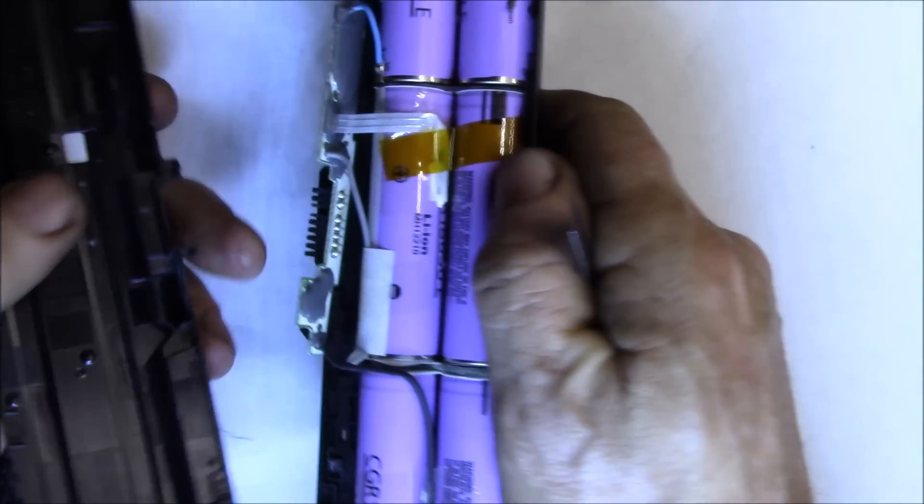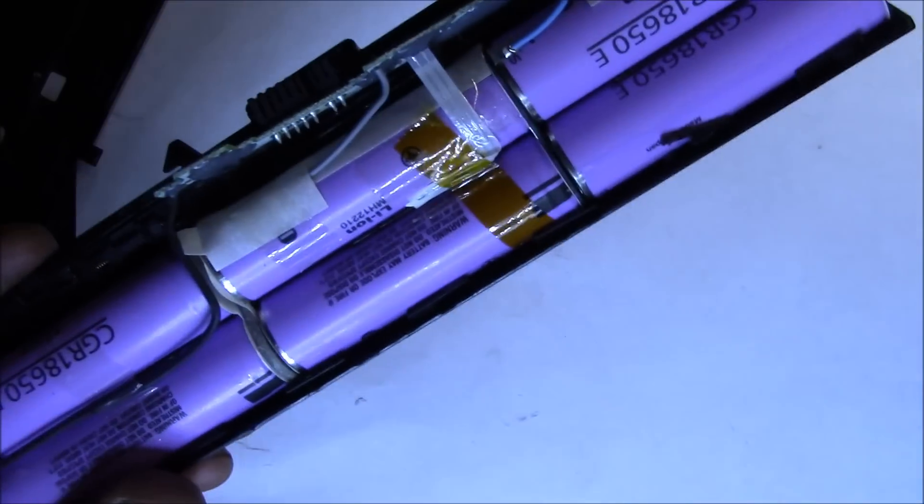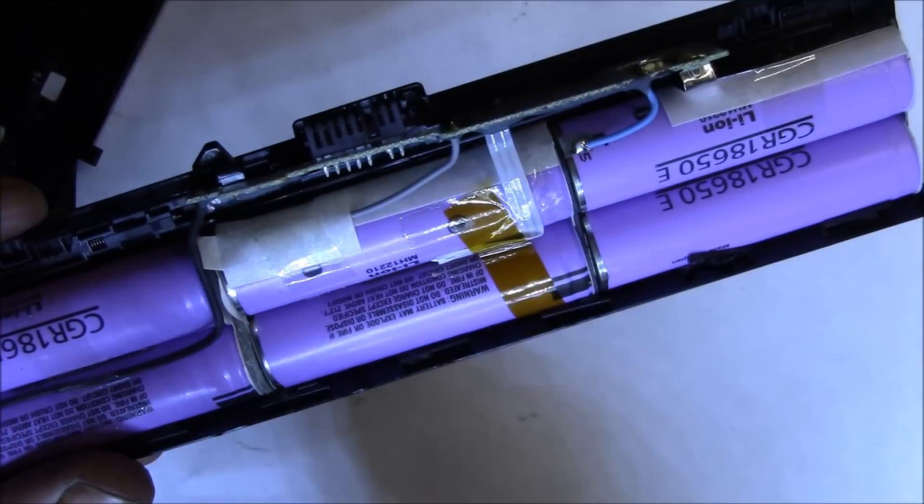This is another one of the purple batteries, and you just crack it open like a clamp. These have double-stick tape, so you need to be careful at this point.